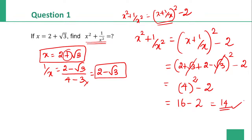So 4 square minus 2. 4 square is 16. So 16 minus 2, the answer is 14. 14 is the right answer.